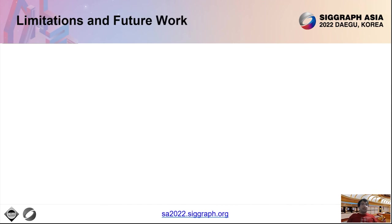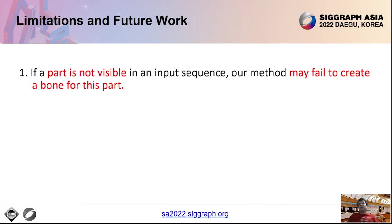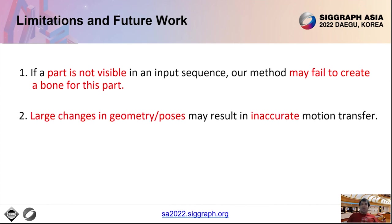MoRig does have limitations and exciting avenues for future work. If a part is not visible in an input sequence at all, such as a tail, our method will be entirely based on the geometry of the target character instead of the motion and may fail to create a bone for that part. Large changes in geometry and poses between the captured and target character may result in inaccurate correspondences, deformations, therefore rigs, and motion transfers. Finally, our method is currently limited to linear blend skinning.